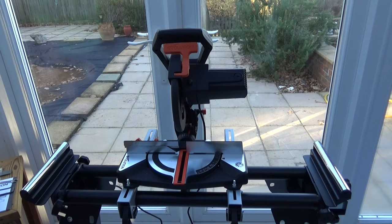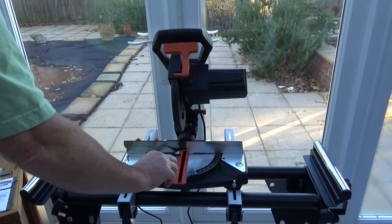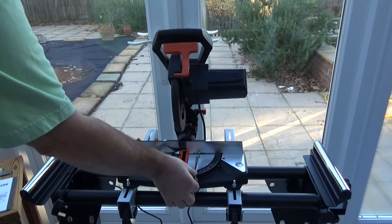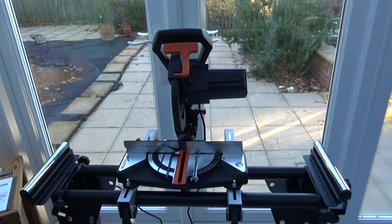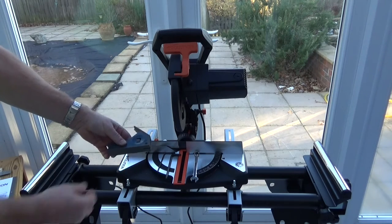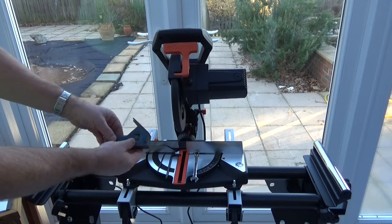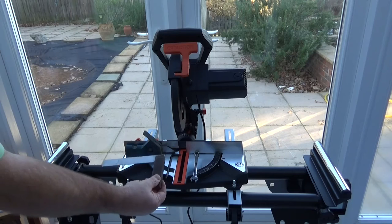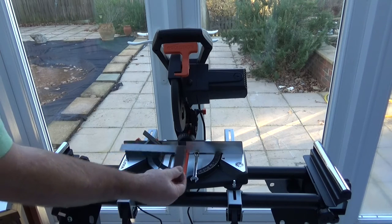To set the saw up you're going to need the following pieces of equipment: a 5mm allen key, a 3mm allen key, a 10mm spanner, a small square with a 45 degree angle, and a small 90 degree set square.